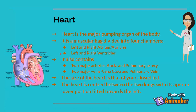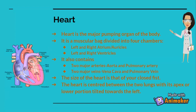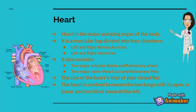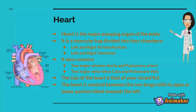Then the purified blood comes from the lungs with the help of the pulmonary vein. Then the pulmonary vein transfers the blood to the left atrium. Then the left atrium pumps blood to the left ventricle. Then the left ventricle pumps blood up to the aorta, which then sends all of the blood to the rest of the body through smaller vessels.